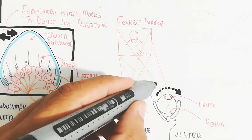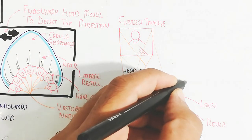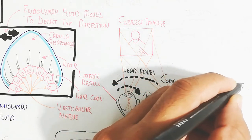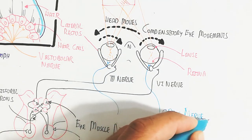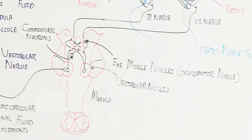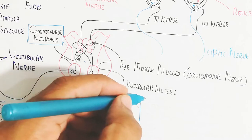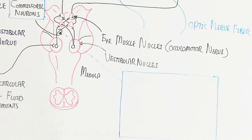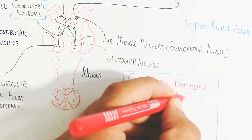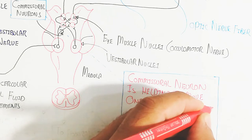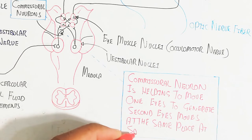When the head moves left, the eyes move right — both eyes move equally in a compensatory eye movement. During examination, if the eyes move left, the head can move right, and the optic nerve fiber also detects and processes the image. The commissural neuron helps move one eye to generate the second eye's movement at the same time. During traveling, this coordination is disrupted, and that is the problem — some people experience it and some do not.